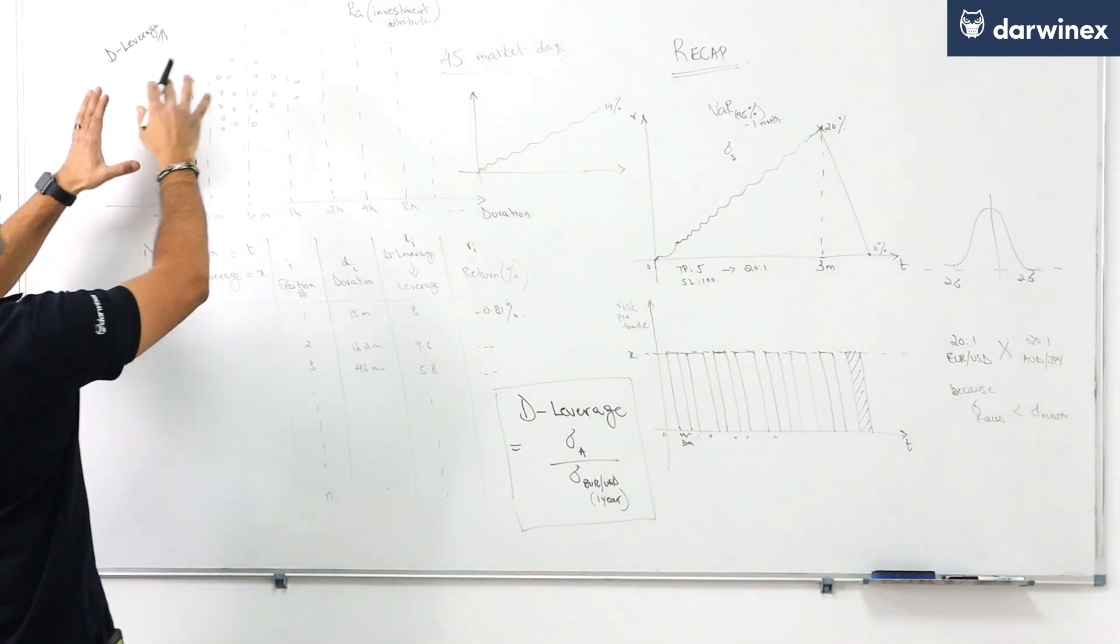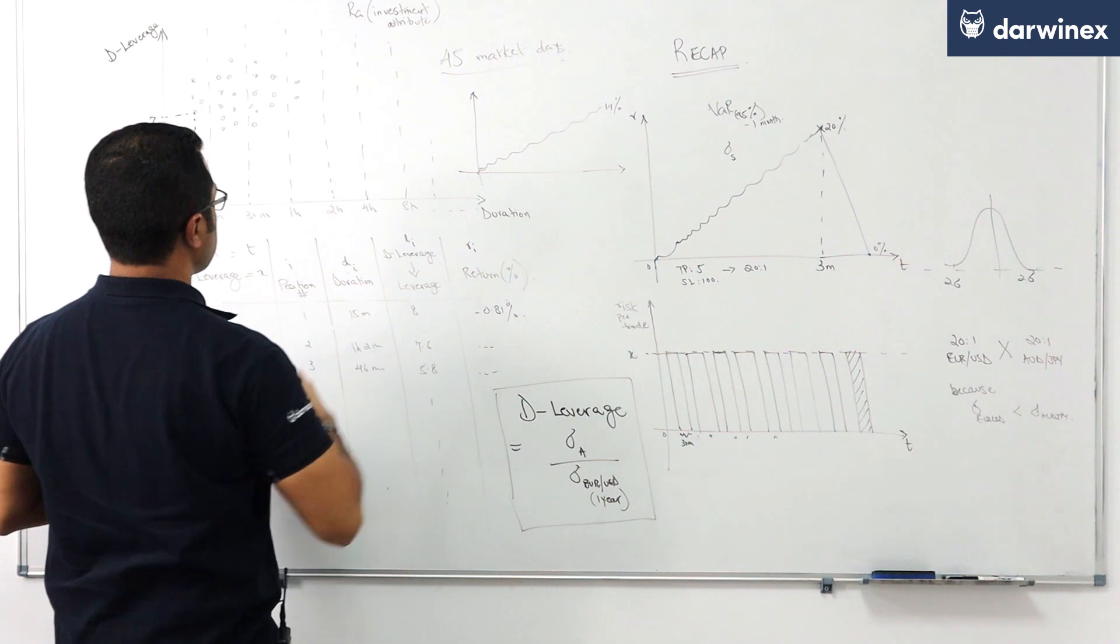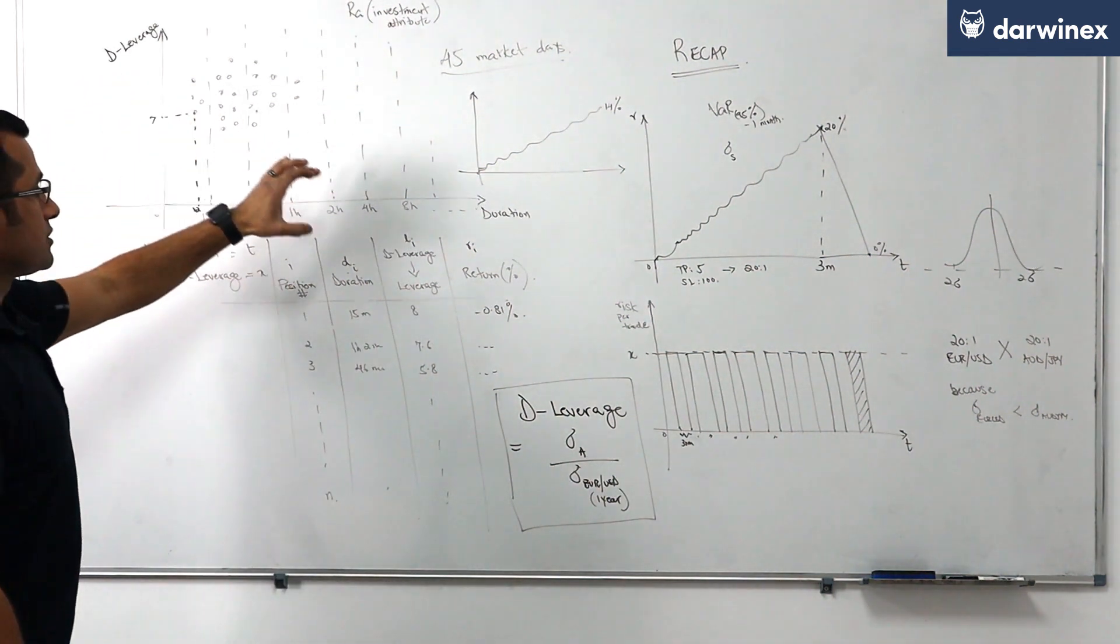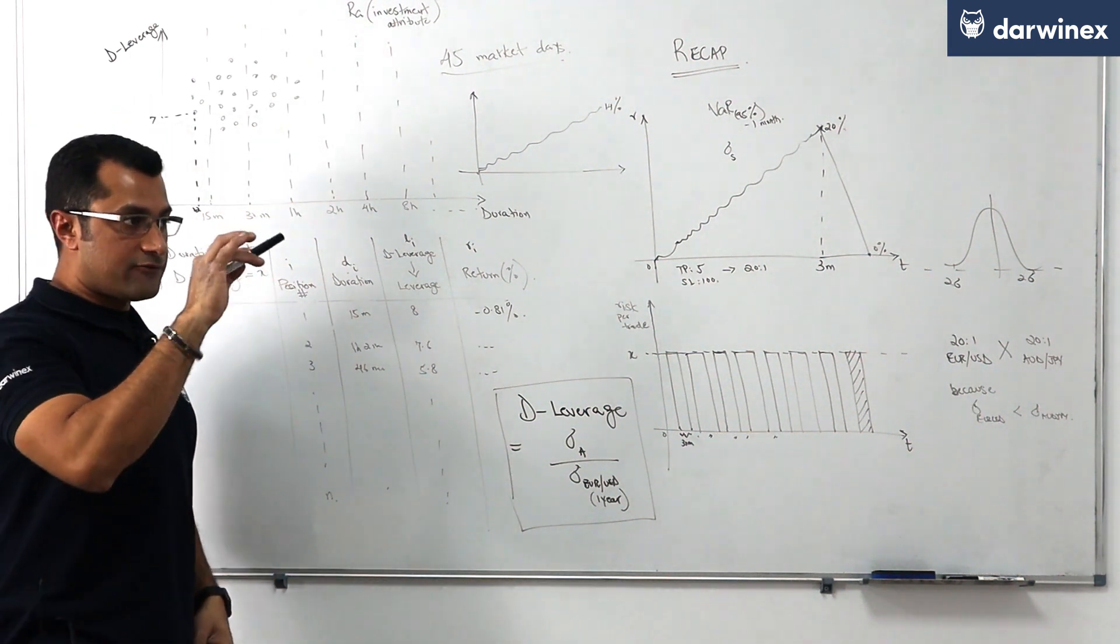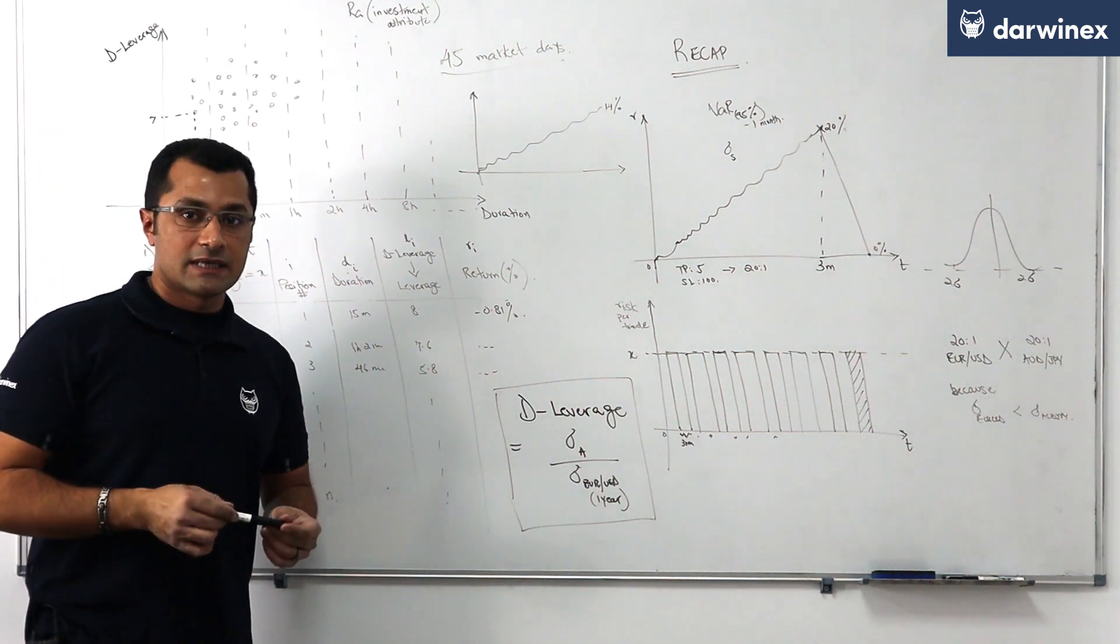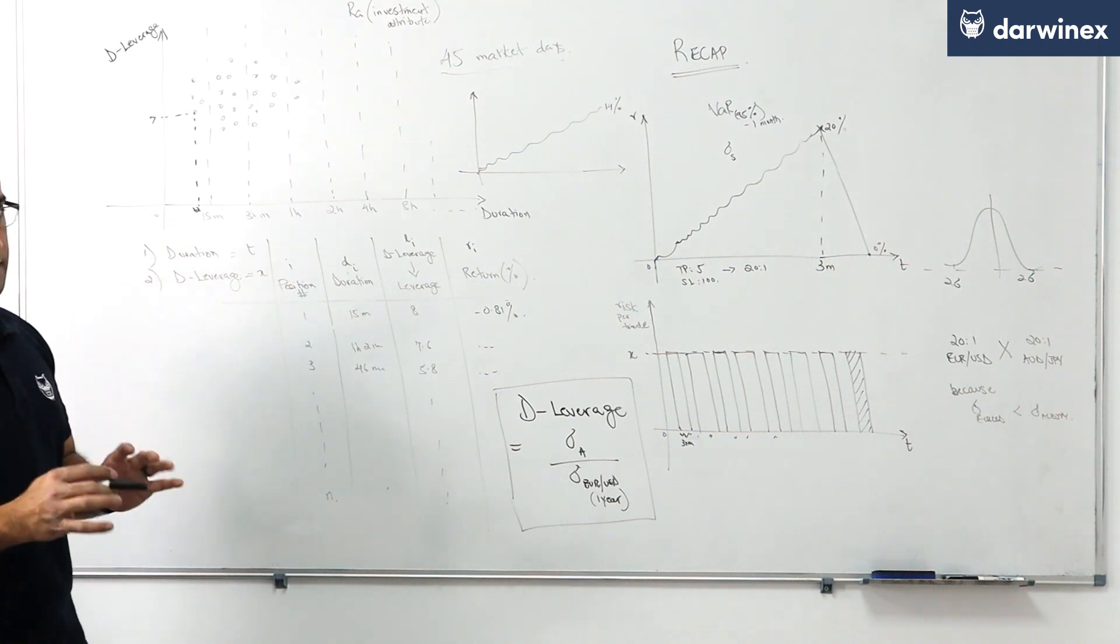Now given that we have all of this positional data over the last 45 market day reference period available to us and given that we have the axes of deleverage and duration accompanying each position, each position also contains some additional data that you can hover with your mouse over and it presents that data to you, but for the purposes of calculating value at risk we need only concern ourselves with the deleverage and duration at this point in time.